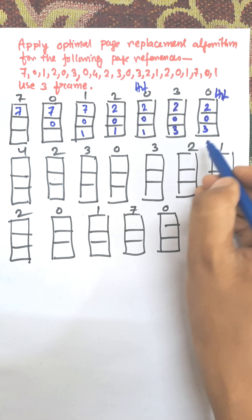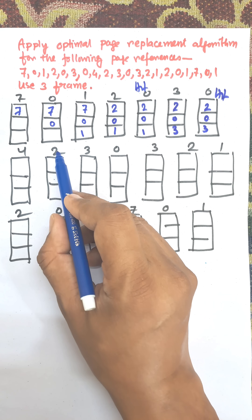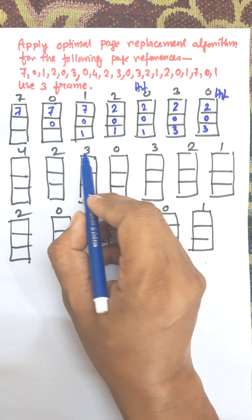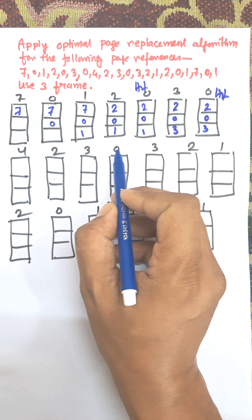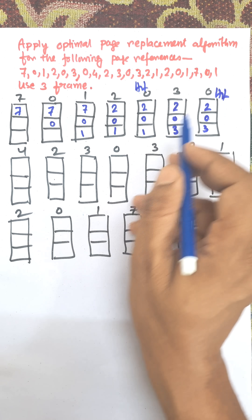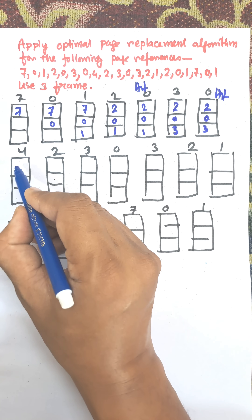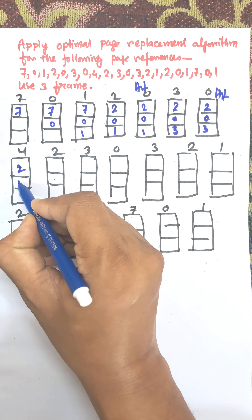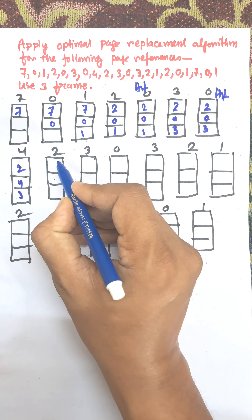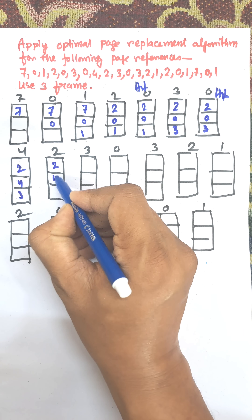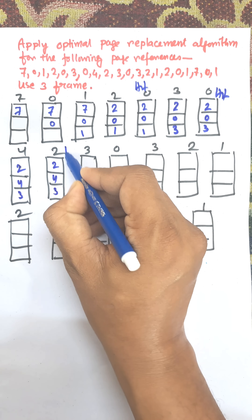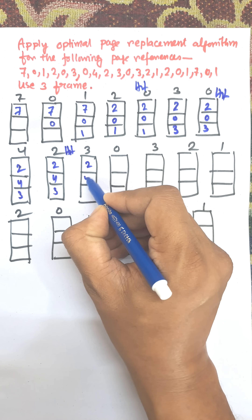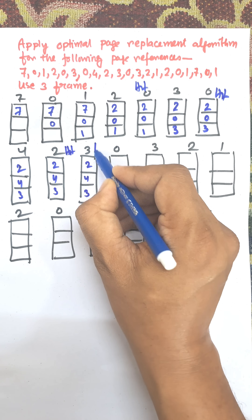When 4 arrives, from frames 2, 0, 3 — looking ahead, 2 is found, then 3 is found, and 0 is the last element. So 0 is replaced by 4, giving us frames 2, 4, 3. Then 2 is available — that is a hit. 3 is available — that is a hit.